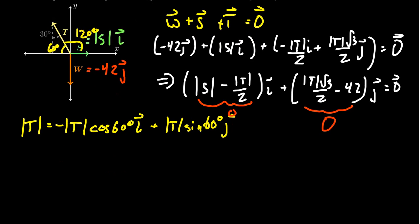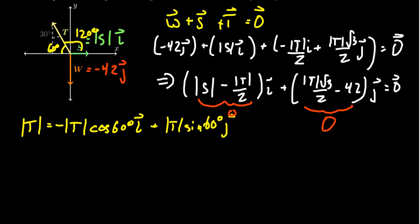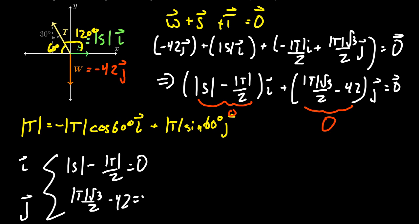So this gives us equations, right? The first equation, the horizontal equation here, the one associated to I, this tells us that the magnitude of S minus the magnitude of T over 2 is equal to 0. And then the vertical component tells us that the magnitude of T times the square root of 3 over 2 minus 42 is equal to 0, like so. We have a system of equations with two unknowns.